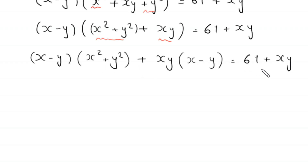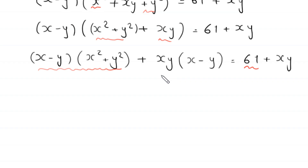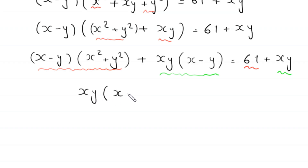Now we have the sum of two terms on the left hand side and the sum of two terms on the right hand side, so we compare them. We compare x minus y times (x squared plus y squared) with 61, and xy times (x minus y) with xy. First we write: xy times (x minus y) equals xy.